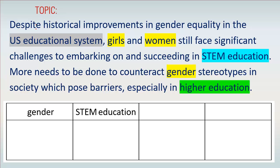Why start simply? Because if you find articles, reports, books, or videos which discuss gender and STEM education, it's very likely they'll be useful to you. Later, you can use database filters and additional search terms to narrow your search to just United States and just college-level education if you wish.